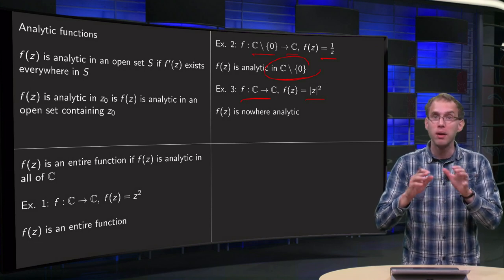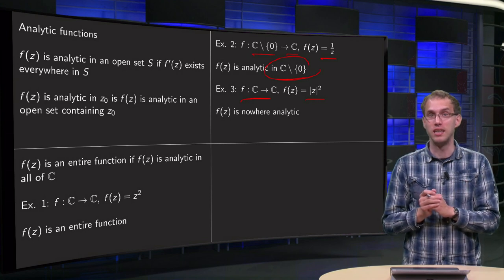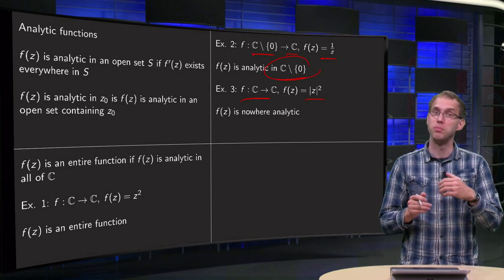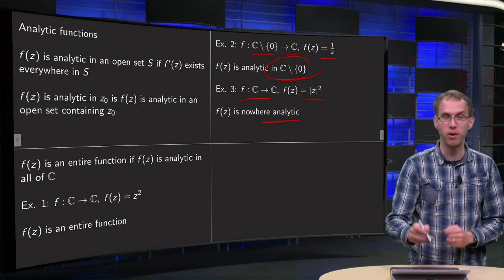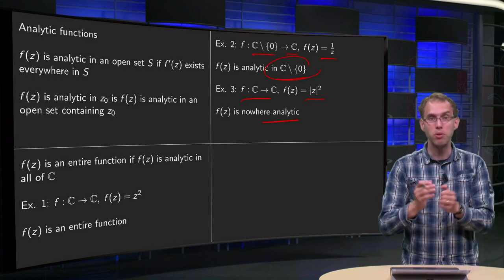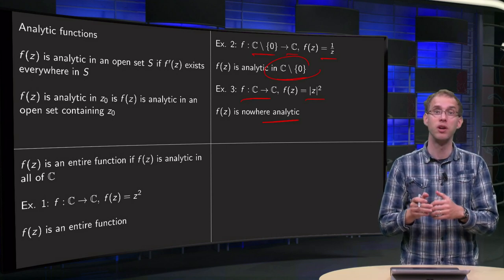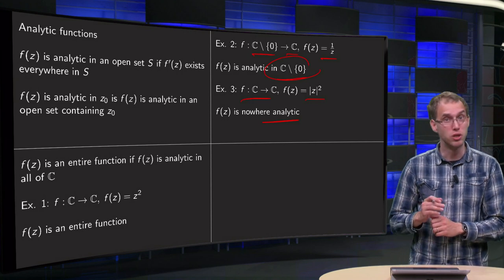So we are not able to find any open neighborhood around this point 0 where f is analytic, which means that f is nowhere analytic. Even though it is differentiable in one point, that is not enough, you need to be able to find some neighborhood in which f is differentiable, which is impossible in this case. This f(z) is nowhere analytic.